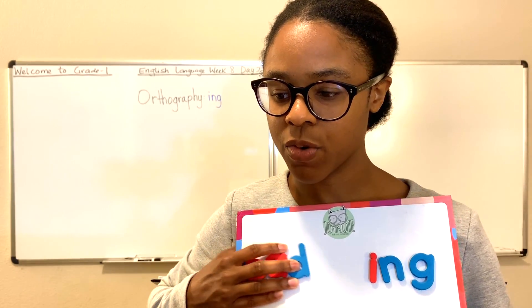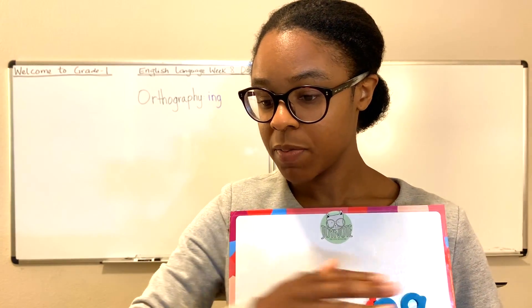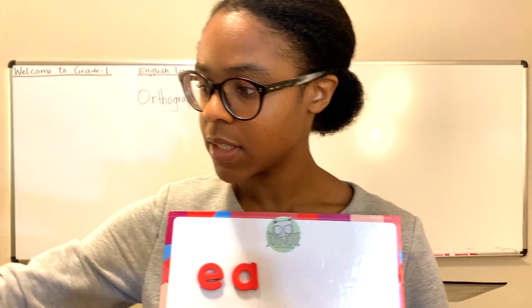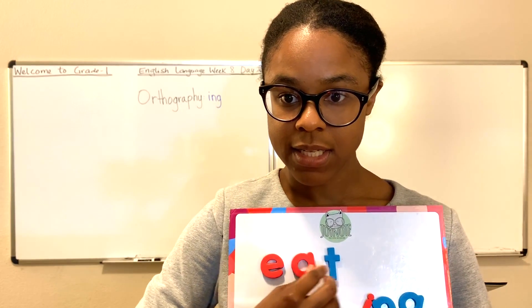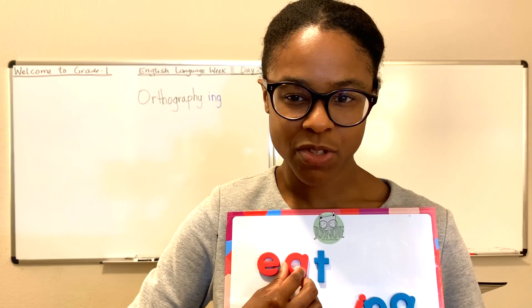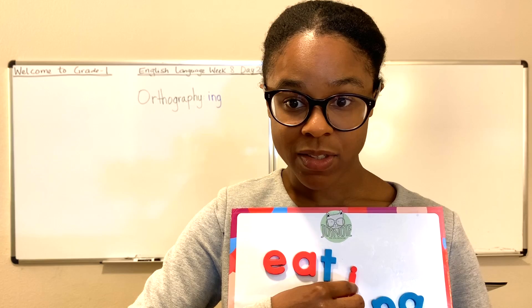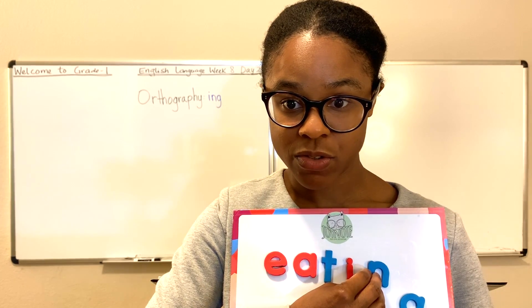Let's find another word. What else could we be doing? We could be eating. Could we be eating? How do you spell eat? E-A-T. I eat between two and three times a day. What happens if I'm eating this very moment? I am eating: E-A-T-I-N-G.